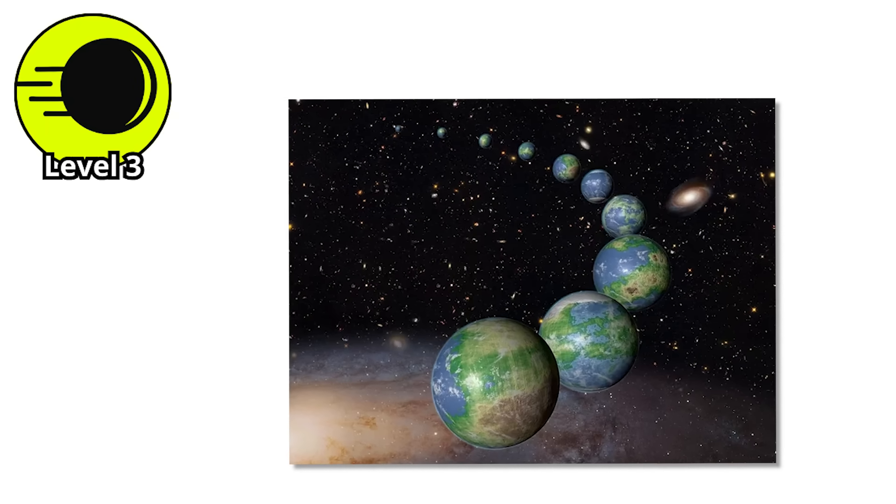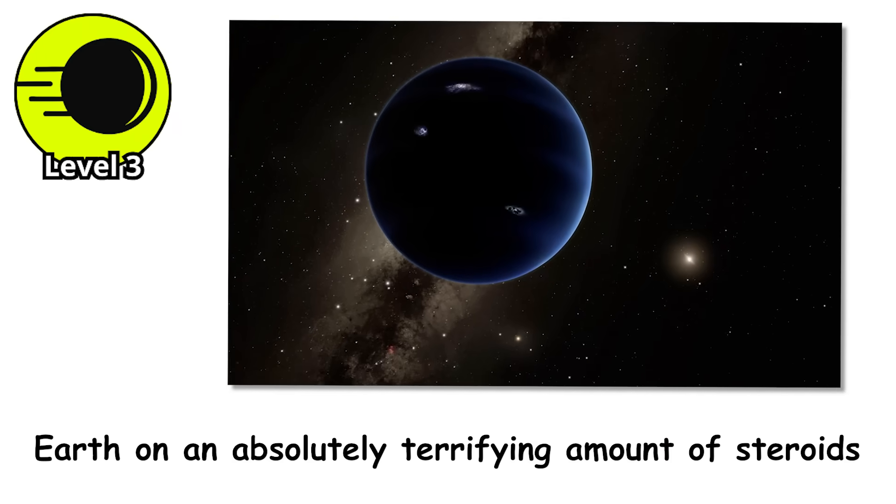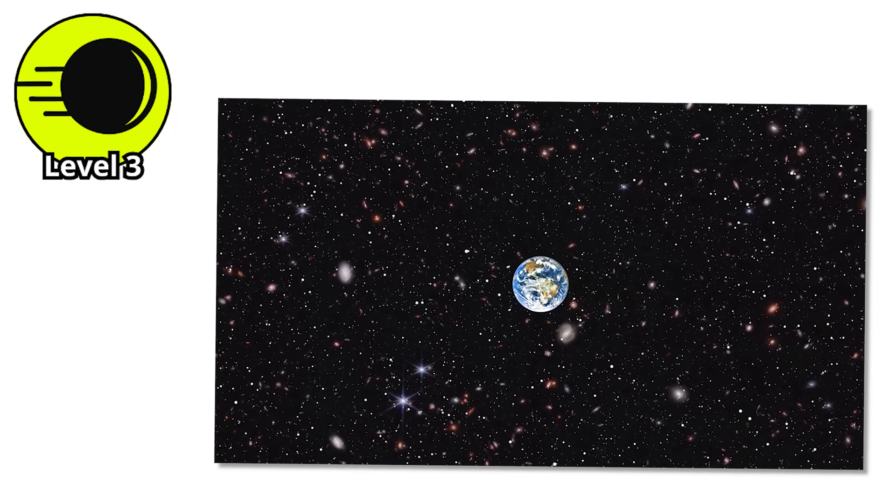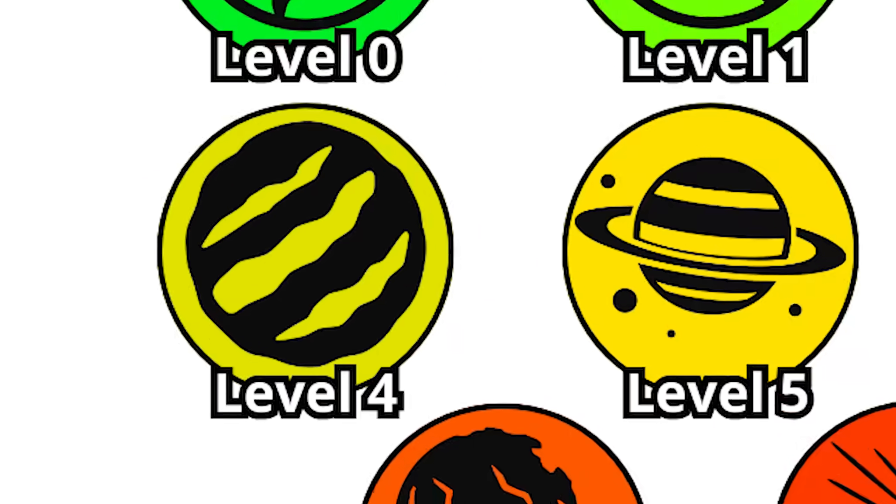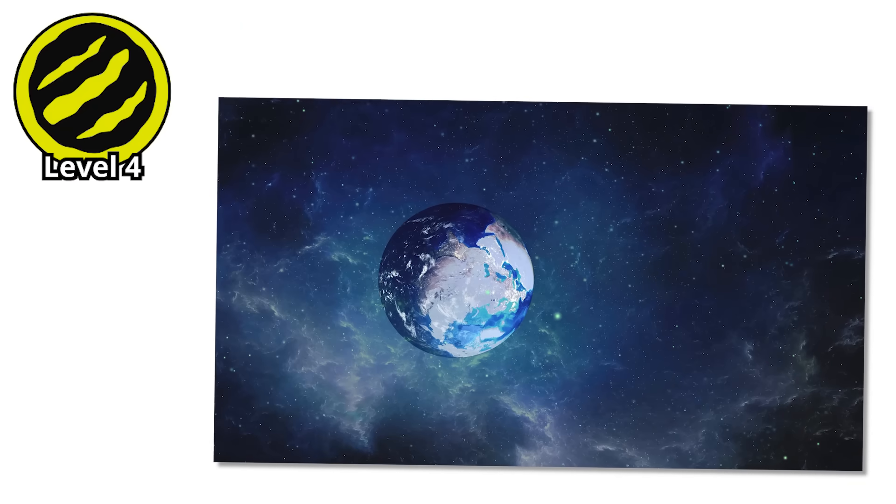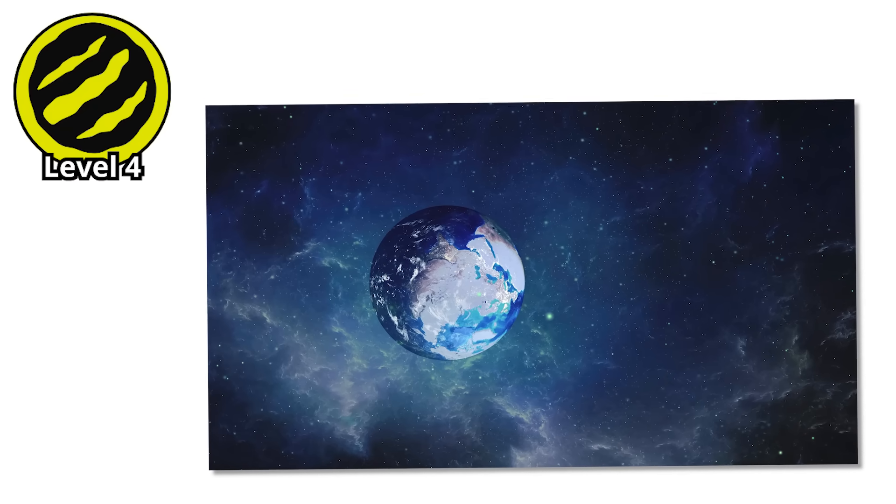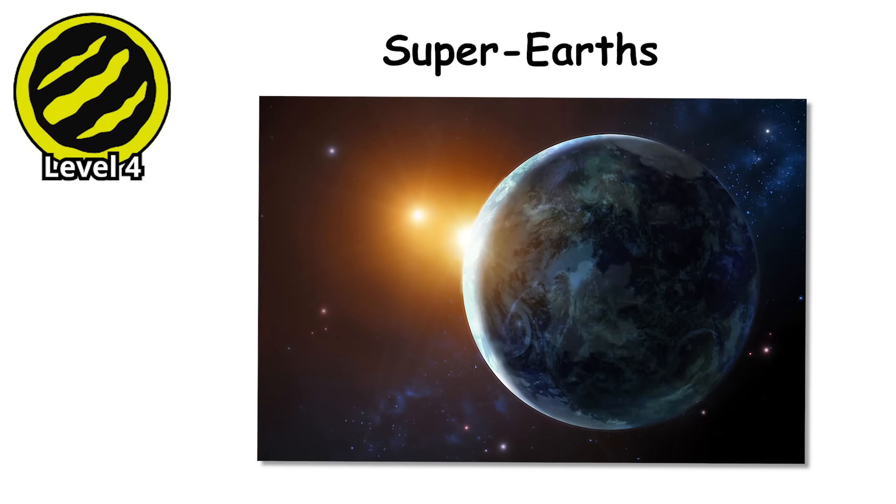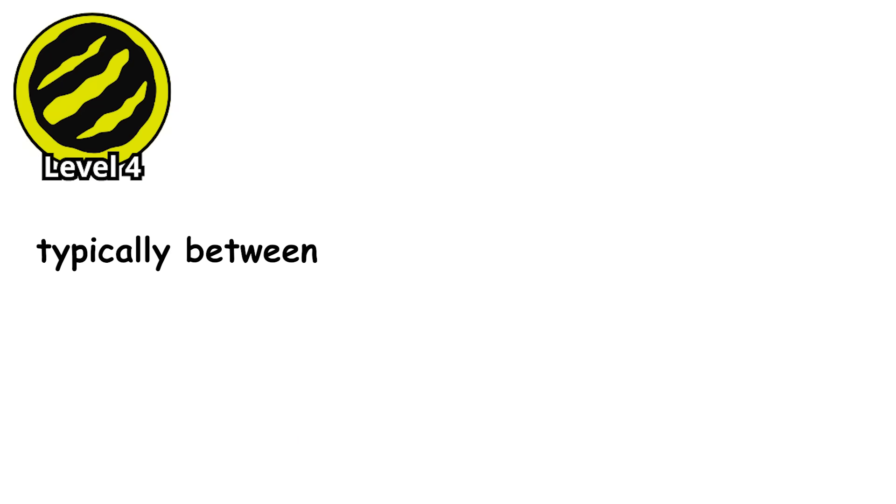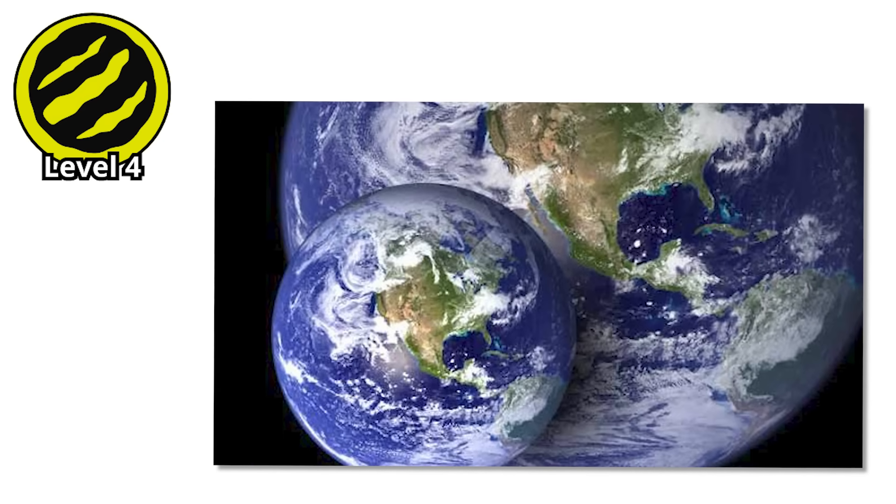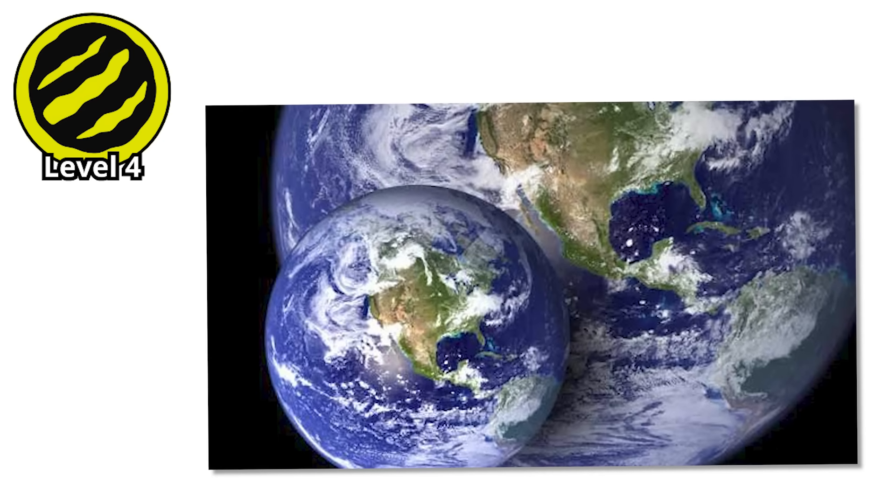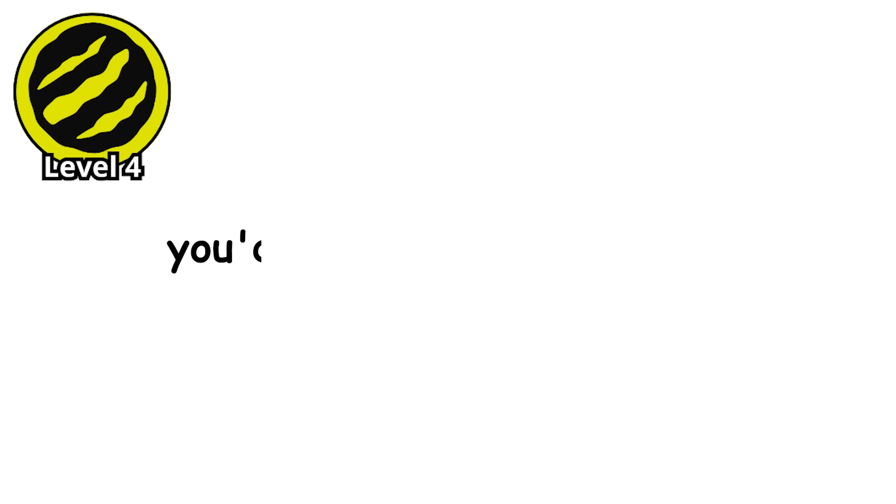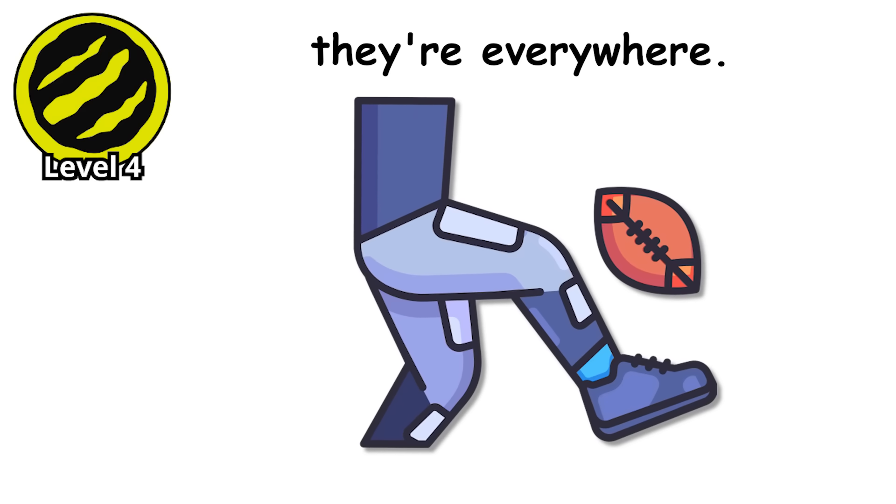From planets with no sun to planets that are basically Earth on an absolutely terrifying amount of steroids. Worlds where gravity itself becomes a prison. Level four. Earth is a terrestrial planet, but what if Earth decided to hit the gym and never stopped? Super Earths are rocky planets on steroids, typically between 1.5 and 10 times Earth's mass. They're bigger, denser, and their gravity is absolutely crushing. Standing on a super Earth twice Earth's mass, you'd weigh twice as much. Jumping would feel like you're wearing a weighted vest filled with concrete. And here's the kicker - they're everywhere.